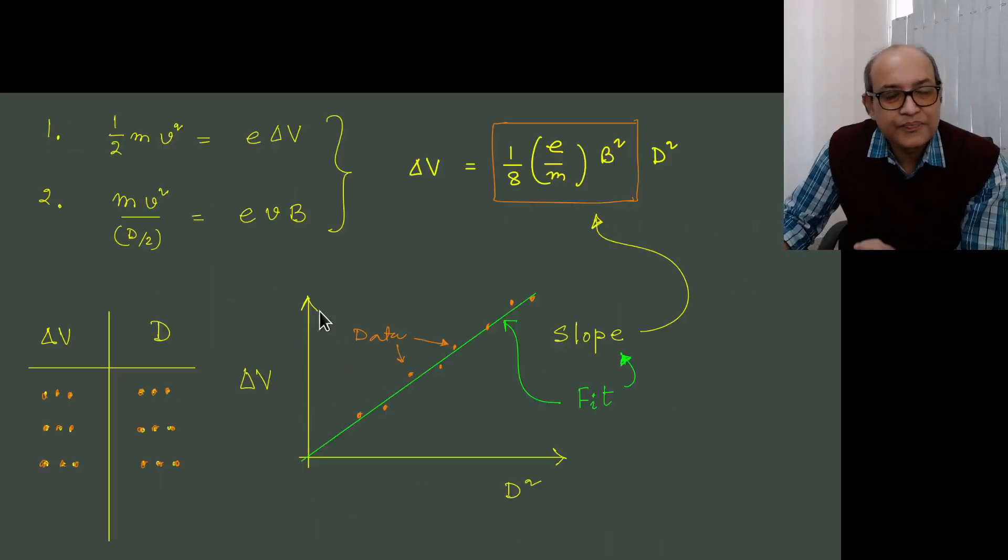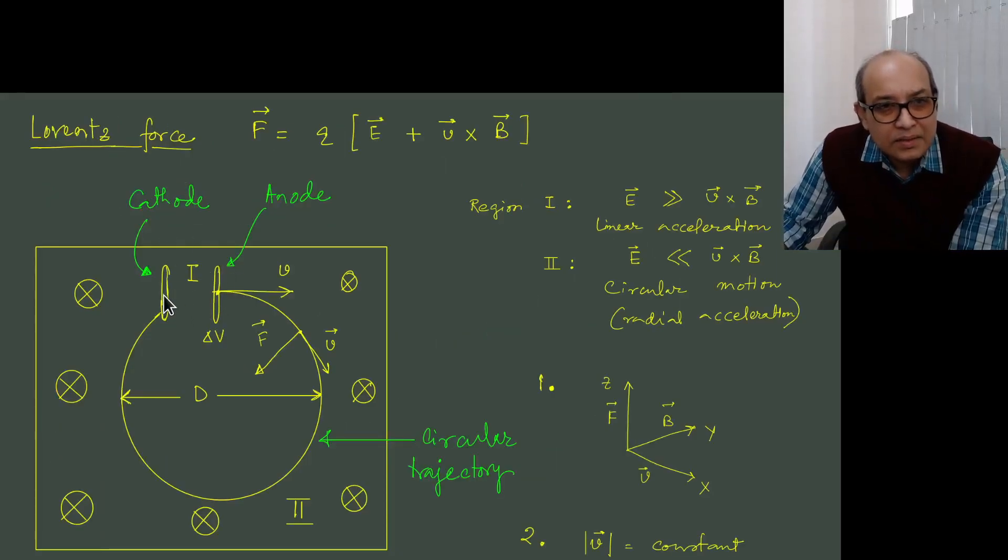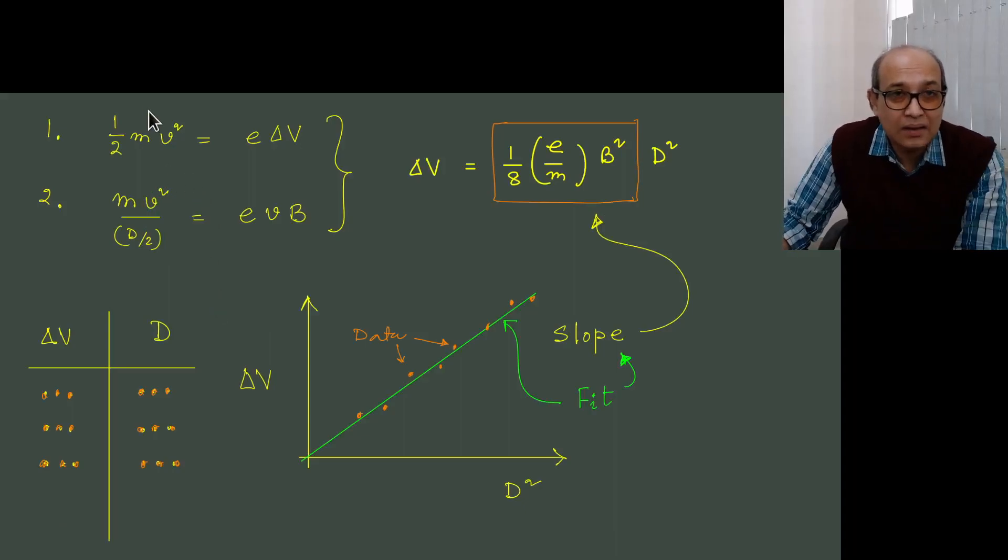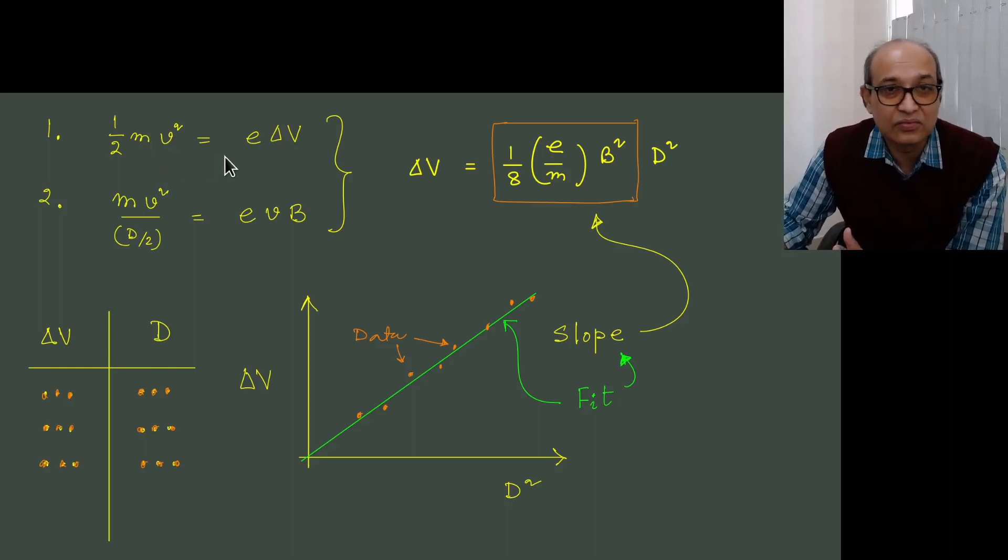Now if we go back and look at this parallel plate, the electron when it started from cathode had nearly zero velocity. And as it is getting attracted towards the anode, the change in electrical potential energy is E times delta V and that must be equal to kinetic energy. This is where our important principle starts. The kinetic energy of the electron as it comes out from the anode is half mv squared, that must be equal to the change in electrical potential energy which is E times delta V.